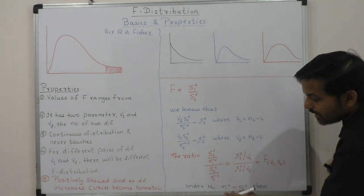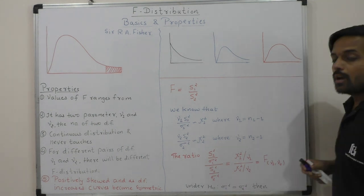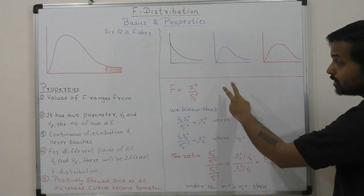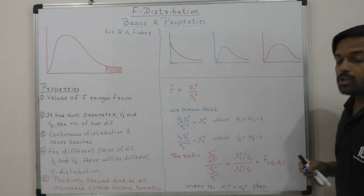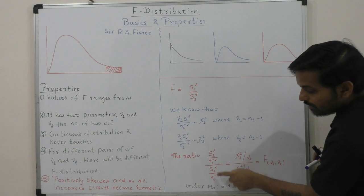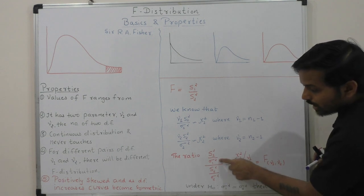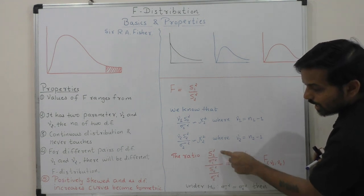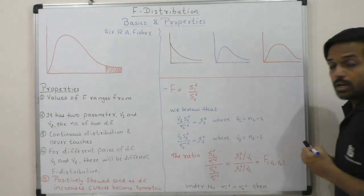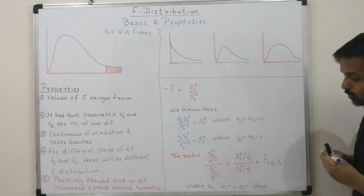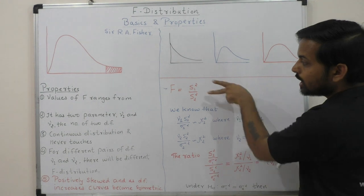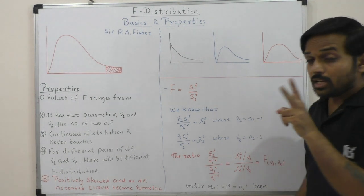If we consider the null hypothesis — that both population variances are equal — then sigma 1 squared equals sigma 2 squared, which means their ratio equals 1. So sigma 1 squared and sigma 2 squared cancel out. What remains is s1 squared divided by s2 squared. Therefore, the F test is the variance ratio.